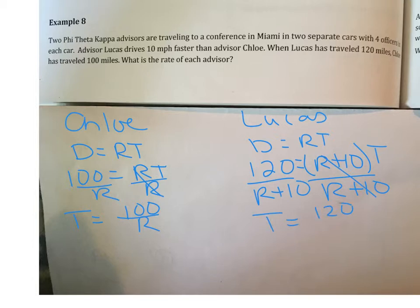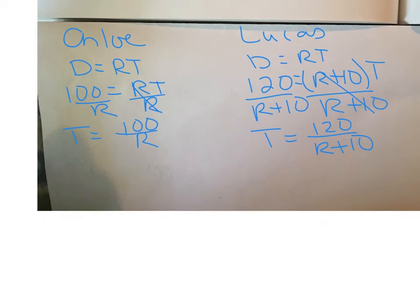So time for Chloe equals 100 over R. Here we're going to divide by R plus 10. That isolates time. So time for Lucas will equal 120 over R plus 10. Alright, the important thing here to remember is these times, Chloe's time and Lucas's time, are equal. So we can actually get rid of time and put these two expressions equal to each other. So I'm going to scroll up here, and I'm going to put 100 over R is equal to 120 over R plus 10. Again, because these times are equal, this time is equal to this time, this is substitution, if you remember that back from chapter 2. I can say that these are also equal.